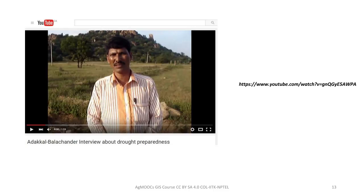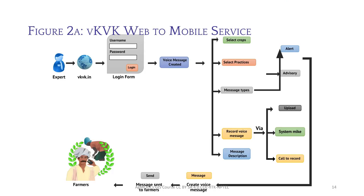Today, it is not necessary to communicate with farmers only face to face. Information like this, which is very specific to localities, can be communicated via mobile phones. IIT Kanpur — Professor T. V. Prabhakar's group, which runs the Ag MOOCs — has developed a very sophisticated yet easy-to-use technology called VKVK for connecting experts to farmers to communicate locality-specific information in a precise and timely manner. With GIS tools and VKVK, farmers can be given extremely precise vulnerability assessments in a very timely way.